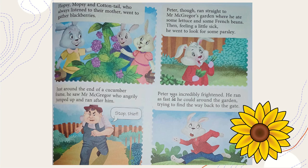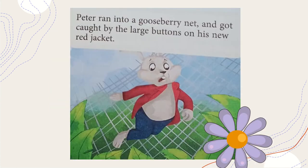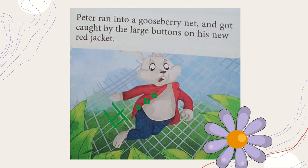Peter Rabbit was incredibly frightened and started running as fast as he could around the garden, trying to find the back gate to escape. While running, he ran into a gooseberry net and got caught by the large buttons on his new red jacket — the buttons got stuck in the net and he couldn't run.